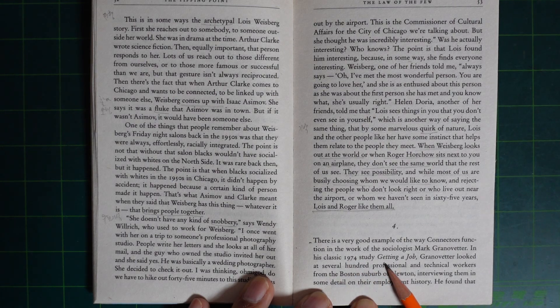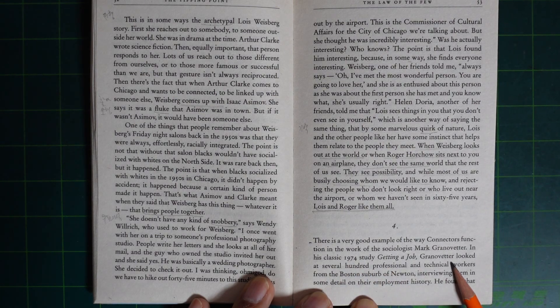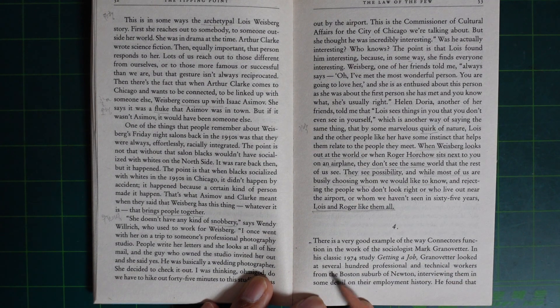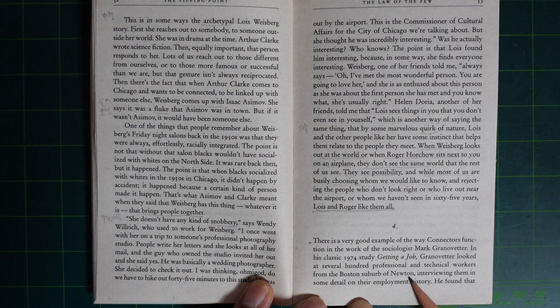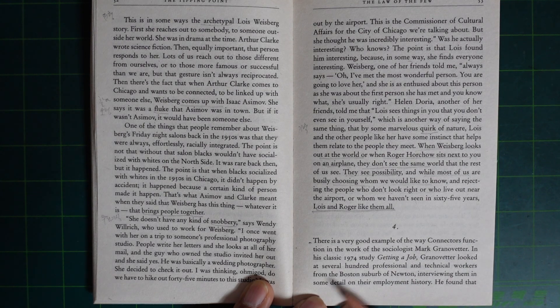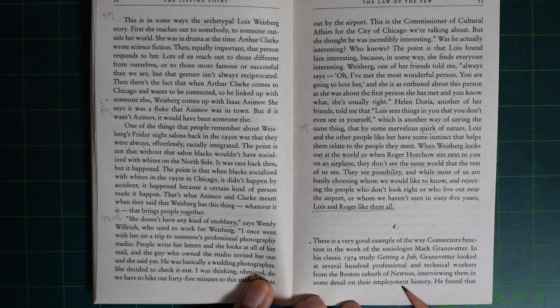In his classic 1974 study, Getting a Job, Granovetter looked at several hundred professional and technical workers from the Boston suburb of Newton, interviewing them in some detail on their employment history.